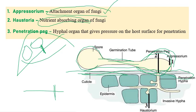Mostly it lands on a leaf surface. Once attached to the leaf surface, it produces a penetration effect. It's a hyphal organ that gives pressure so it will enter into the host surface. The penetration from the appressorium starts to penetrate inside the cells — specifically the epidermal cells. From this penetration, a bubble-like or knob-like structure is produced, and that is called haustoria.